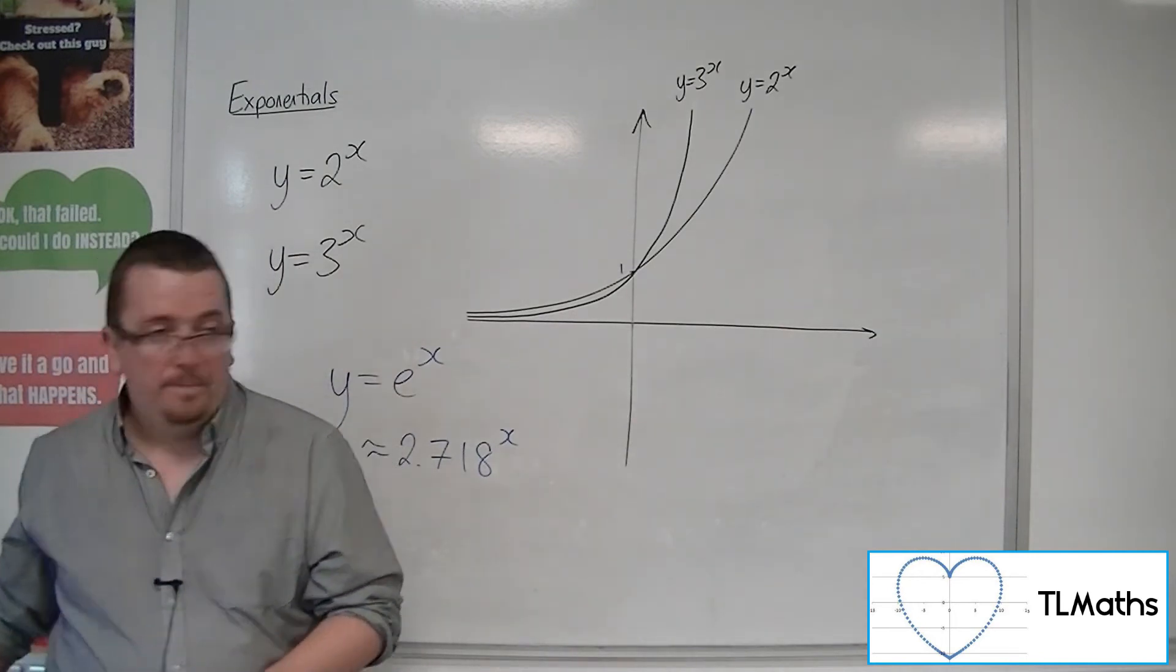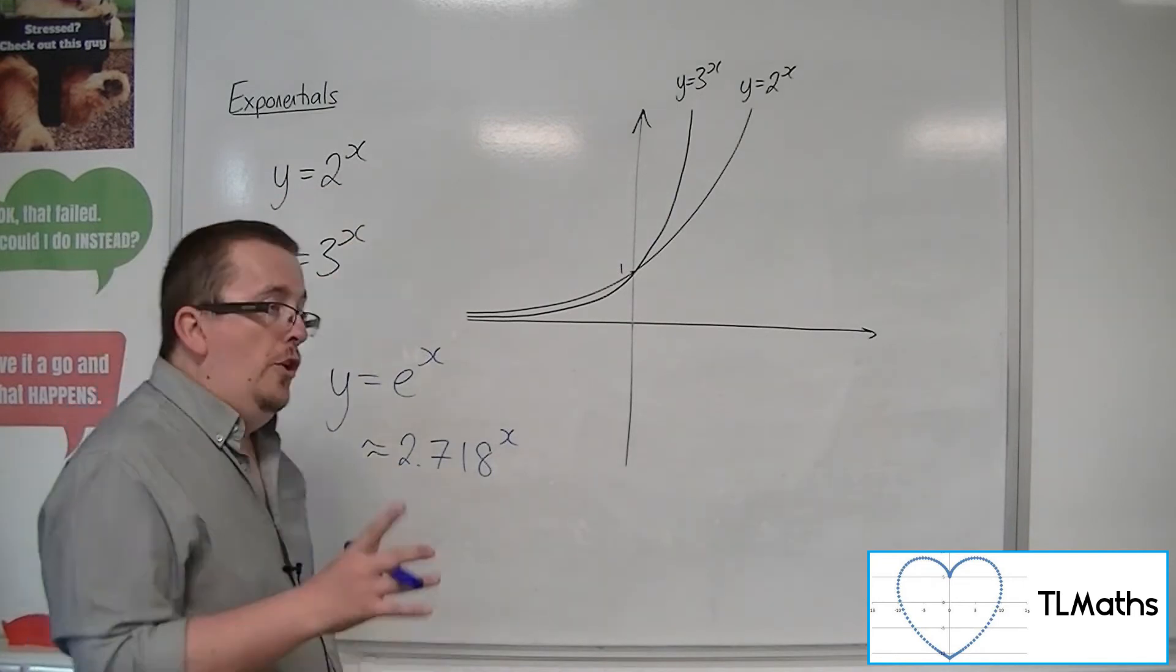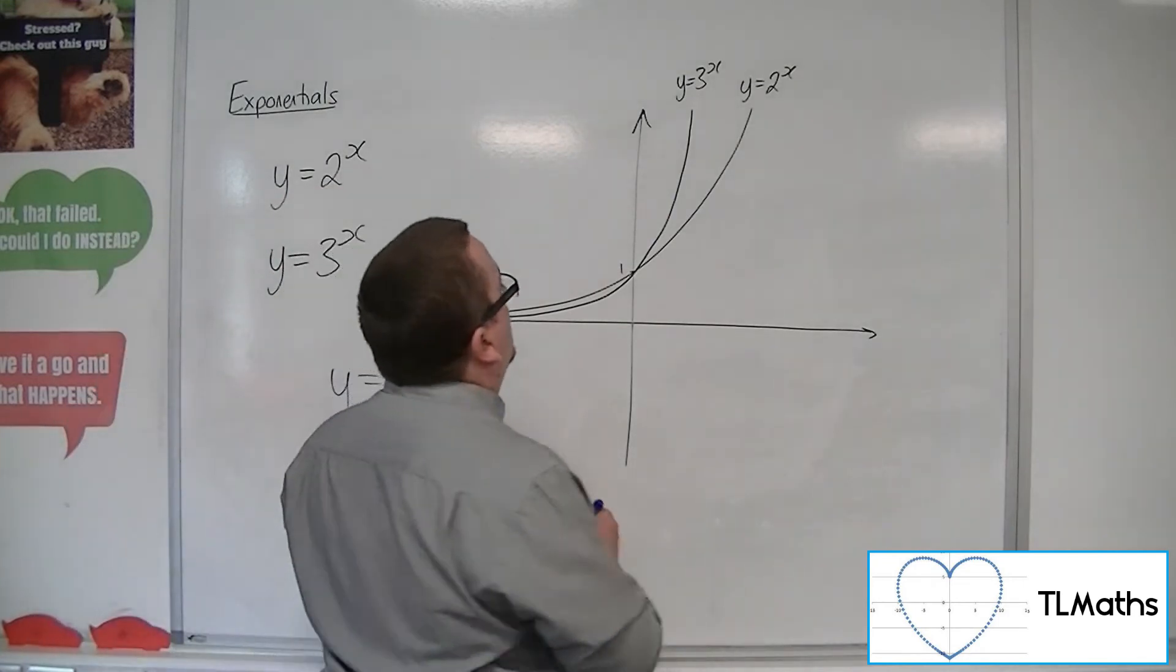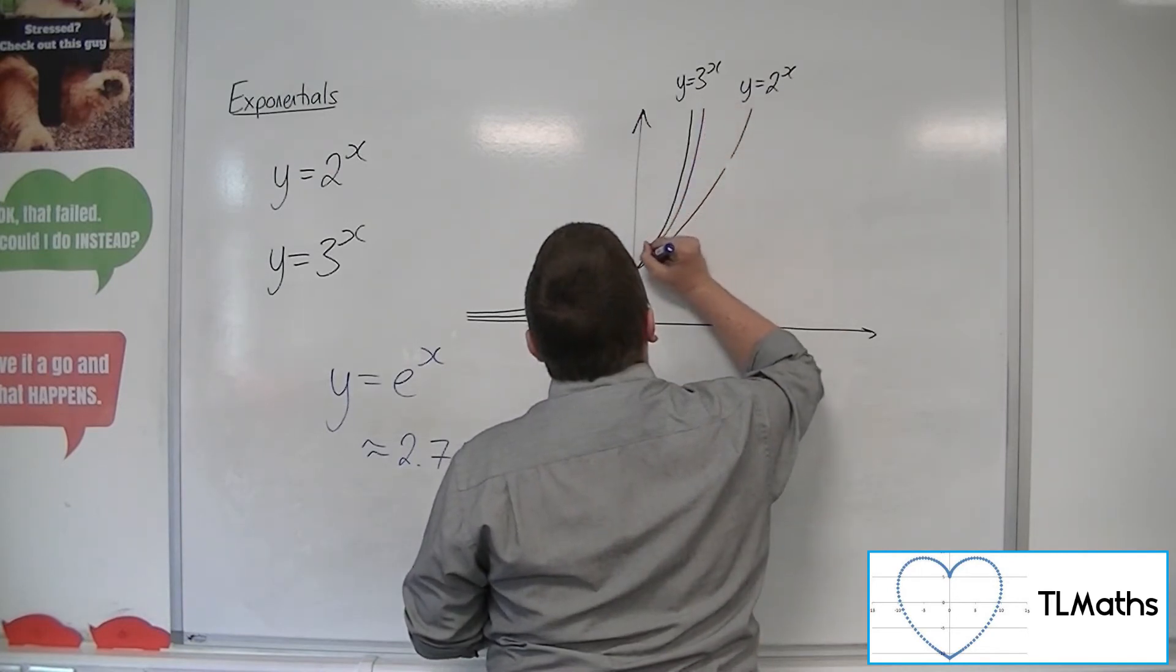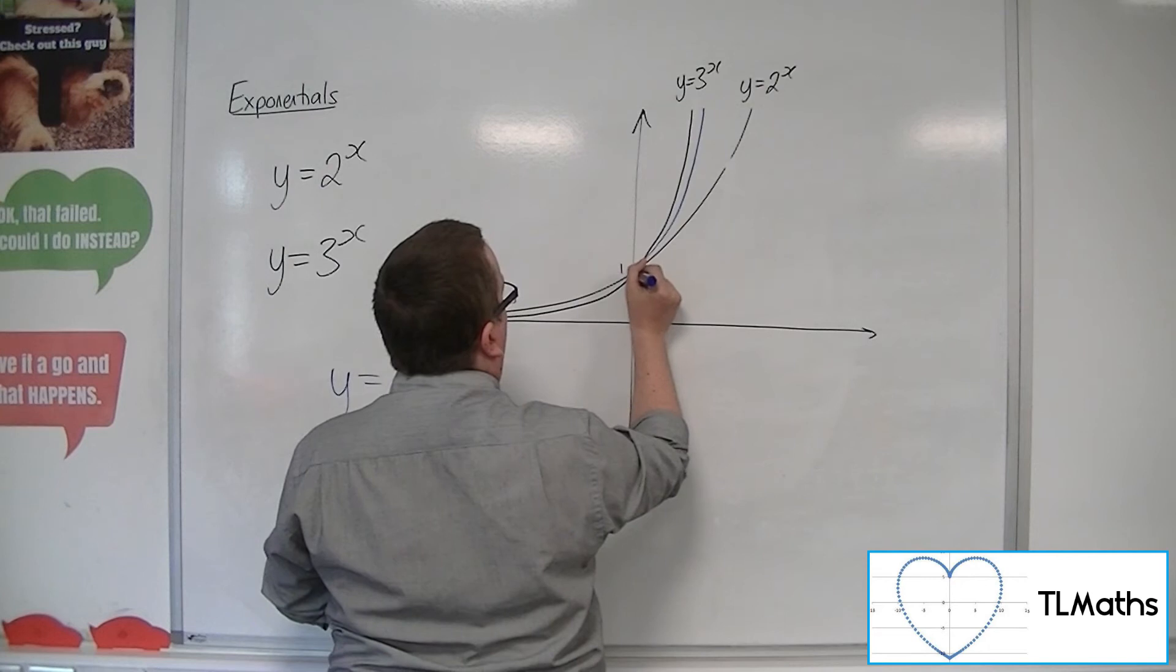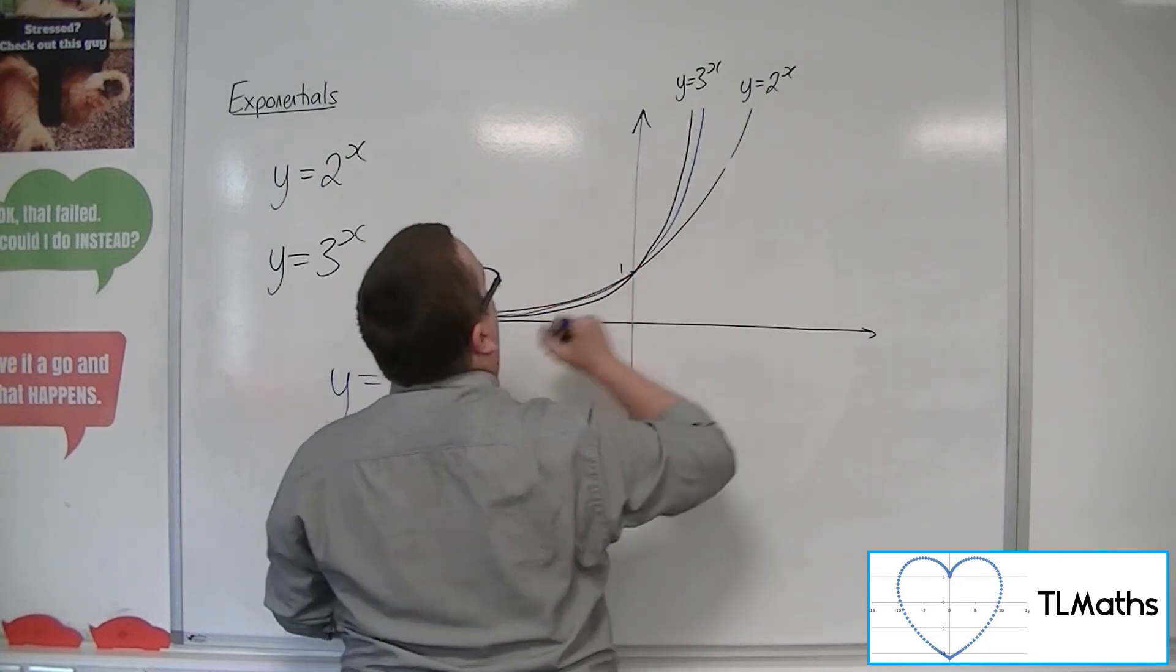So you would be expecting it to be steeper than 2 to the x, but not as steep as 3 to the x. So actually, e to the x, you'd still be going through one on the y-axis, and it would go between those two graphs there.